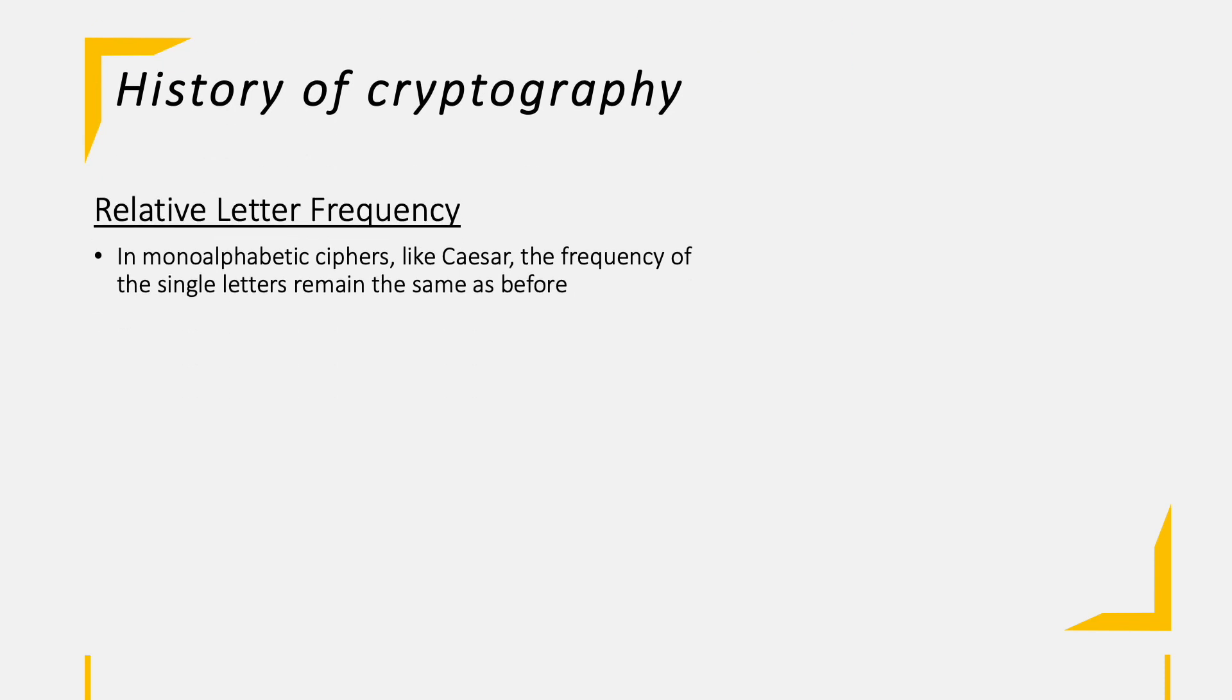Let's do a quick excursion into relative letter frequency to understand the problem we have with monoalphabetic ciphers like Caesar's. As said before, those ciphers have the same frequency of letters in the cipher text as in the plain text, with just a fixed shift of positions throughout the alphabet.